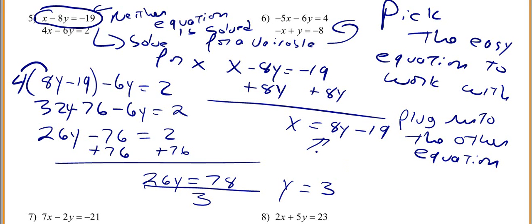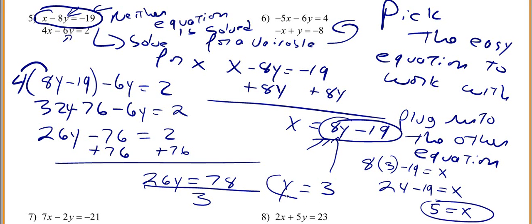Now I will plug this into either equation, and actually what I am going to plug it into is this right here. The reason I am plugging it into 8y minus 19 is because it is already solved for x. It will just save me some steps, but you can put it here if you want, and you may want to work it by putting it into both of those equations just to see that it does not matter, you will always get the same answer. So you have got 8 times y, which is 3, minus 19, and we know that is x. So you have 24 minus 19 equals x, 24 minus 19 is 5, so we know x equals 5, y equals 3.